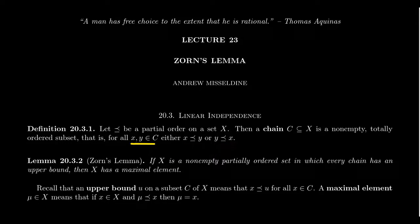The set X itself could be totally ordered, in which case every subset is a chain, but in general that's not what we would expect. That's why we call these things partial orders in the first place — there might be incomparable elements. A chain is this non-empty, totally ordered subset, meaning that every element of the chain is related to each other.